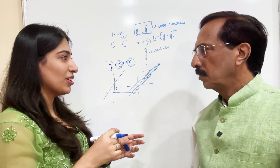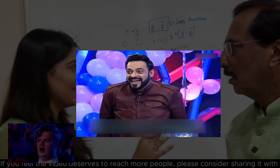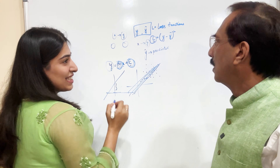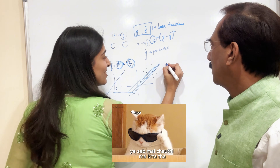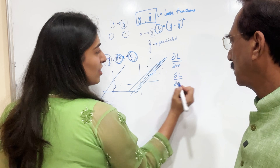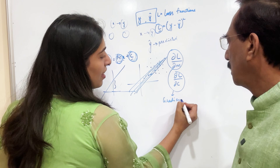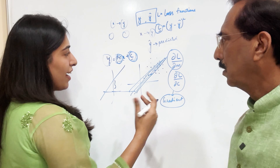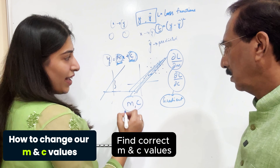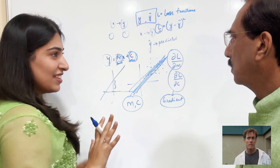Whenever we have to minimize something, do you remember in maths what we do? Differentiation. Very good. So the two variables I have are M and C, and I want to minimize L. So I can calculate DL/DM and DL/DC. These are called gradients. From calculating these gradients, we will understand how to change our M and C values so that we find the correct M and C — the best fit line.